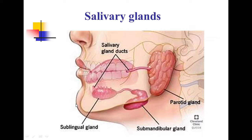To summarize, the salivary gland consists of two main components: stroma and parenchyma. Stroma is the connective tissue component, and parenchyma consists of acini and ducts. We have seen the different types of acini and the branching pattern of the duct system. Now let us see the histology of the major salivary glands: the parotid gland, submandibular gland, and sublingual gland.